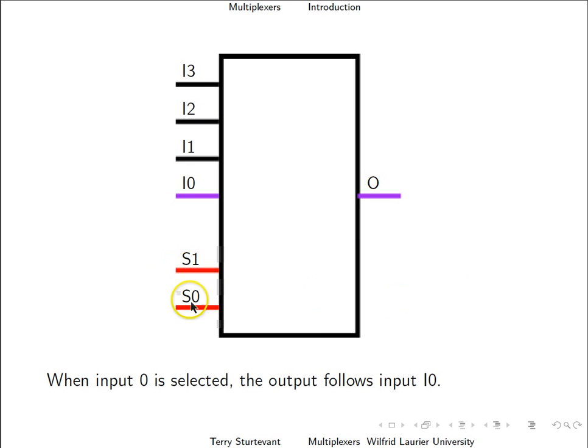When input 0 is selected, indicated by both of these being low, the output follows input I0. When input 1 is selected, indicated by 0,1, the output follows I1.